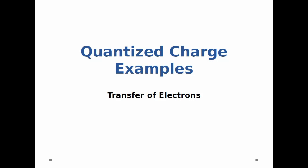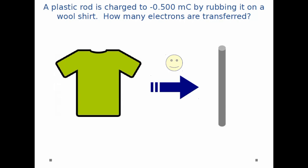In this example we're going to look at quantized charge, specifically the transfer of electrons. On the right I have a gray plastic rod, on the left I have a green wool shirt, and I rub the plastic rod against the shirt and I transfer electrons from the shirt to the rod.